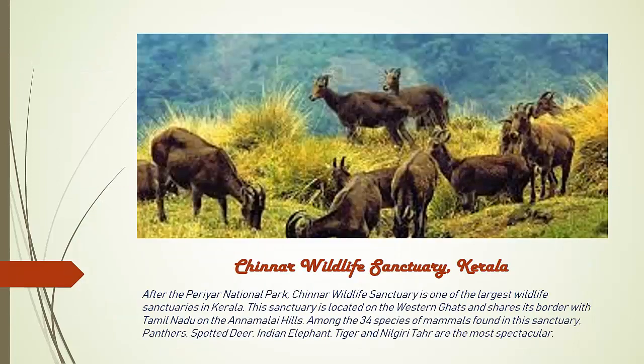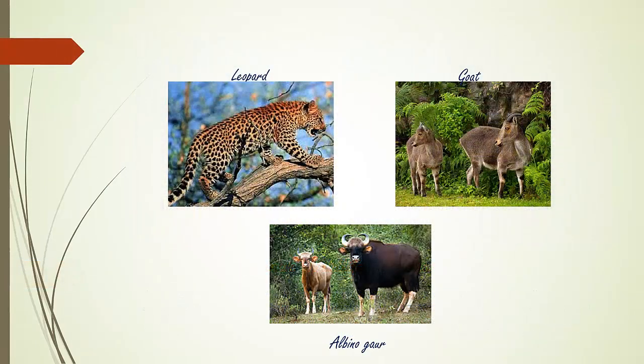Chinnar Wildlife Sanctuary is one of the largest wildlife sanctuaries in Kerala, after Periyar. This sanctuary is located on the Western Ghats and shares a border with Tamil Nadu on the Anamalai Hills. Among the 34 species of mammals found in this sanctuary, examples include Leopard, Gaur, and Albino Gaur.